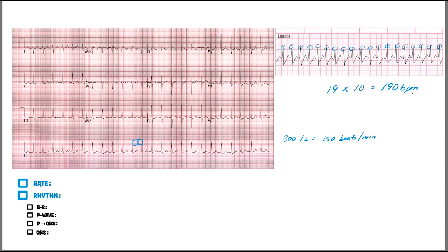So our rate is about 150 beats per minute. Next, we determine the rhythm by looking at the R-to-R interval on the rhythm strip, making sure the distances are about the same. Marking points along the strip, I get about two boxes consistently between each contiguous R wave. As I move throughout the length of this EKG, they're definitely two boxes consistently — so this is definitely a regular rhythm.